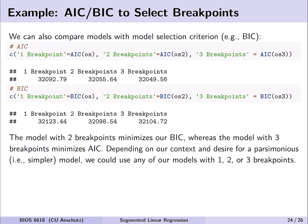Beyond Davies' test, we can evaluate multiple breakpoints through model selection criteria like AIC or BIC. Using the AIC or BIC function on model objects os, os2, and os3: AIC agrees with Davies' test that three breakpoints seems optimal, while BIC suggests two breakpoints minimizes the criterion. This tells us there is some flexibility — based on context and desire for parsimony — in choosing one, two, or three breakpoints.